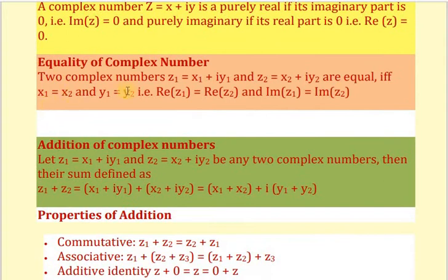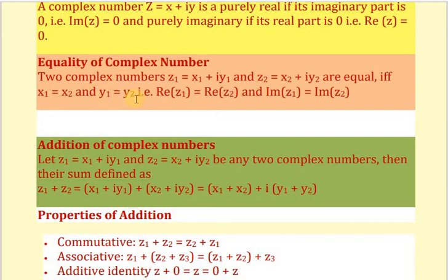Now, equality of complex numbers. Suppose two complex numbers are given as z1 equals x1 plus iy1 and z2 equals x2 plus iy2, and they are equal. They are equal if and only if the real parts are equal, that is x1 equals x2, and the imaginary parts are equal, that is y1 equals y2.